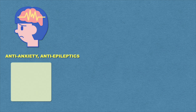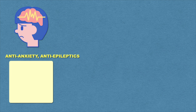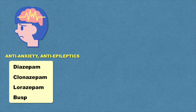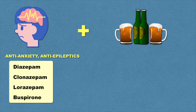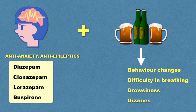If you are taking anti-anxiety or anti-epileptic medicines like diazepam, clonazepam, lorazepam, or buspirone, you must avoid alcohol intake. Taking alcohol with these medicines can cause unusual behavior changes, difficulty in breathing, drowsiness, and dizziness.